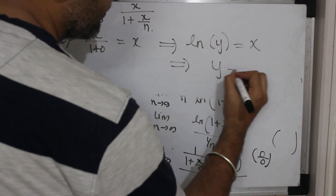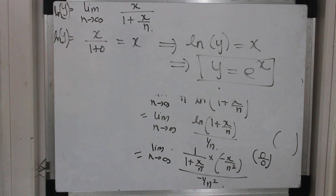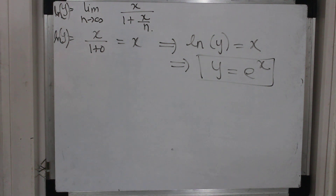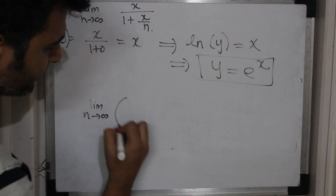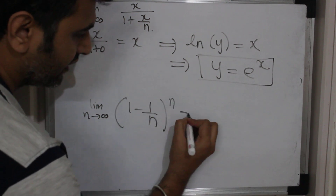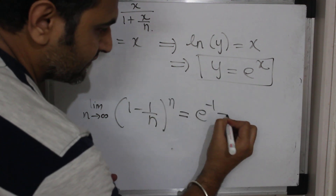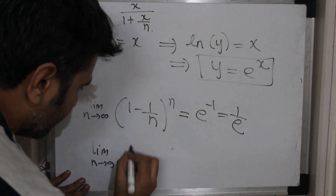So ln(y) equals x, which implies y is nothing but e raised to x. Thanks to the theorem of continuity and the theorem of L'Hôpital, we can prove that the limit of (1 + x/n) raised to n is e raised to x. For example, if someone asks what is the limit as n goes to infinity of (1 − 1/n) raised to n, you can directly apply this theorem. Your x is minus 1, so it's nothing but e raised to minus 1, i.e., 1/e.